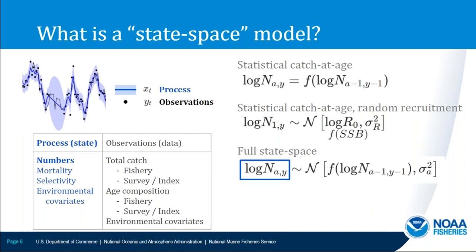The state-space name comes from treating numbers at age as an unobserved process or state variable. State-space models distinguish between process and observation error. In WHAM, the process variables can be numbers at age, mortality, selectivity, and environmental covariates. The likelihood has observation components for total catch from the fishery and survey, age composition from the fishery and survey, and environmental data.